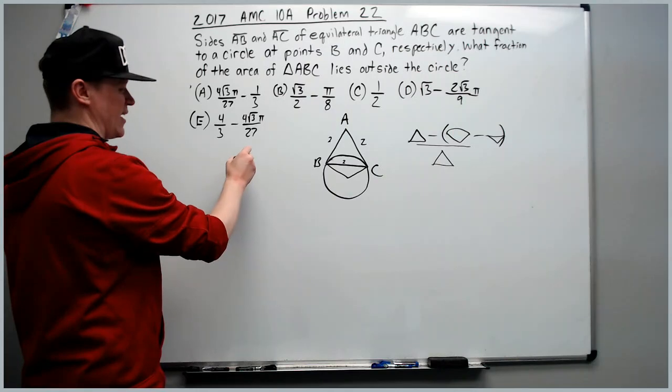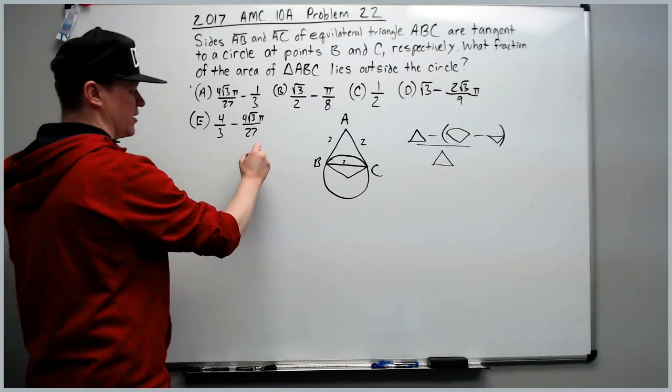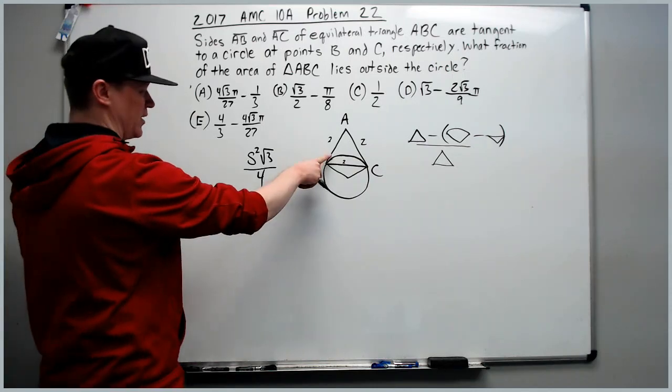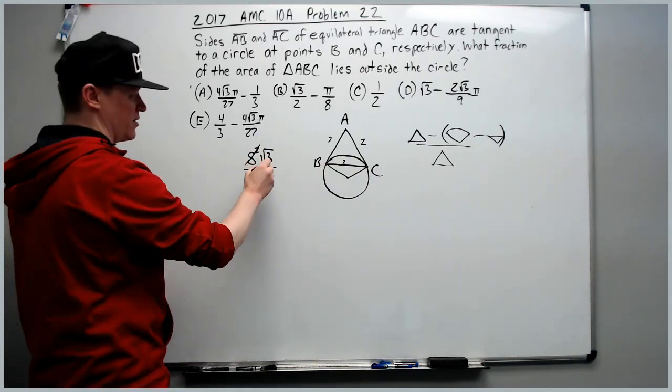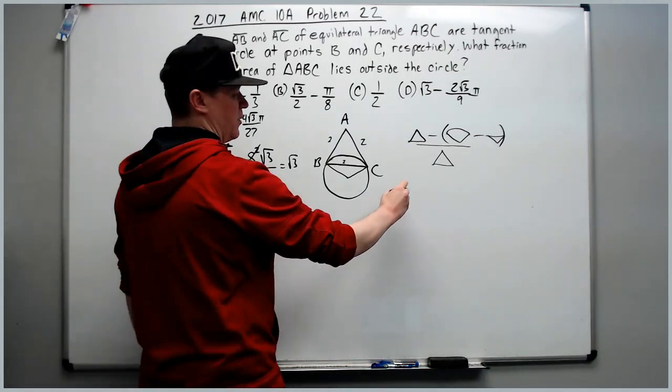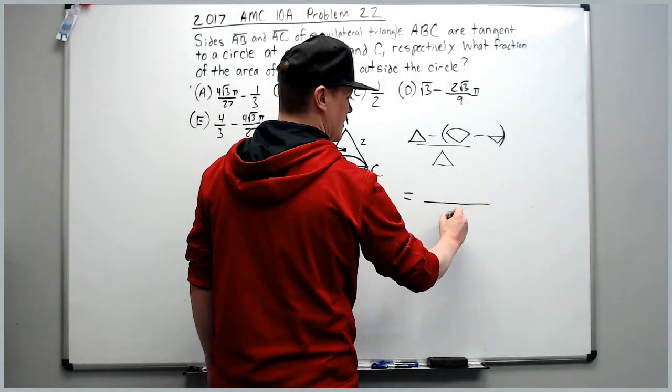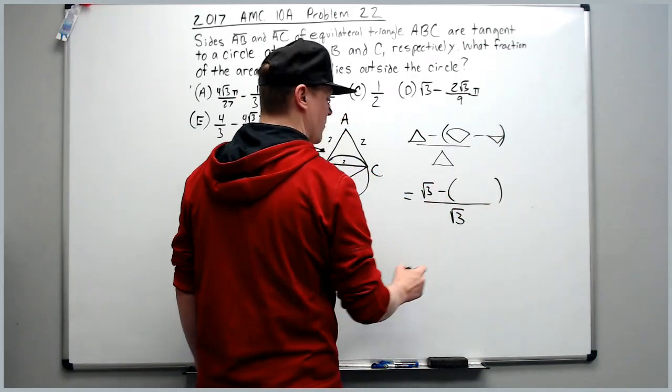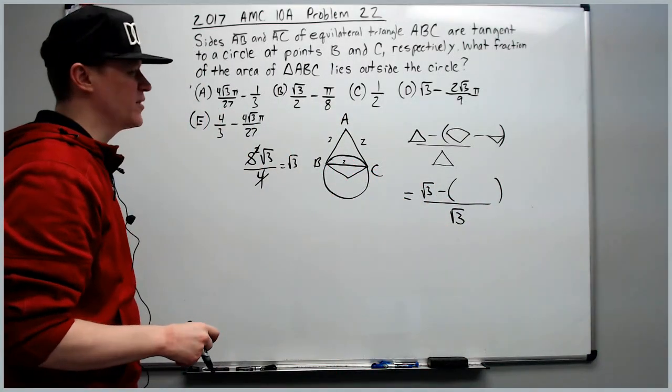One of the reasons for that is the area of an equilateral triangle is S squared root 3 over 4. When I plug 2 into here, the S squared and the 4 cancel, and I just get root 3. That will allow us to say that this is something over root 3, and this is root 3 minus something.